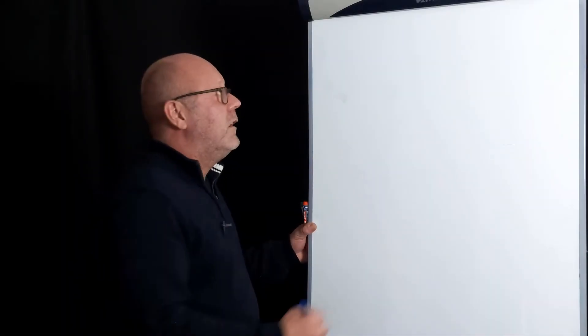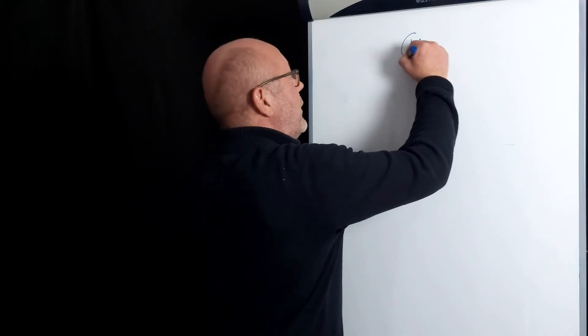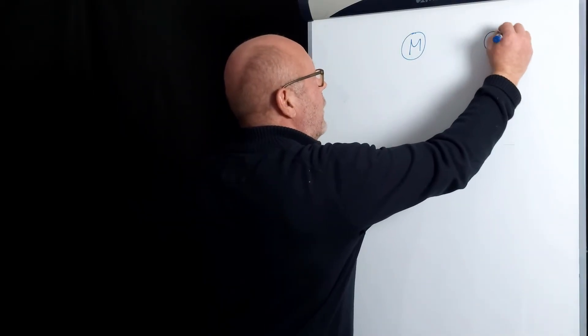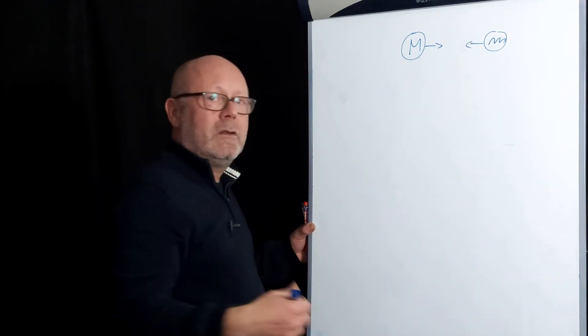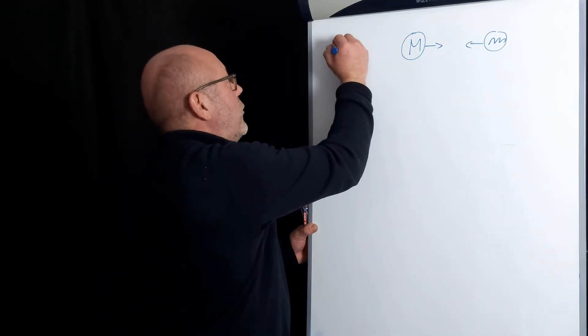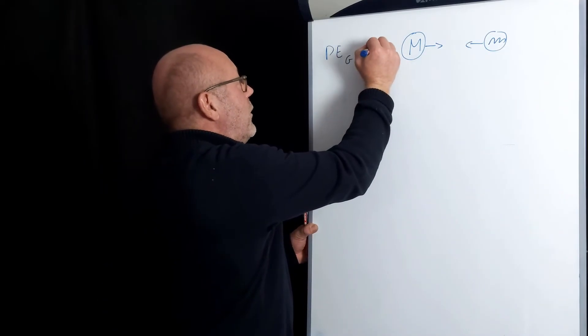To summarize, two masses interacting gravitationally will be attracted to each other. And we have shown that in that case, the gravitational potential energy for that system is negative.